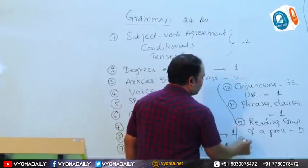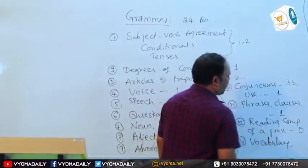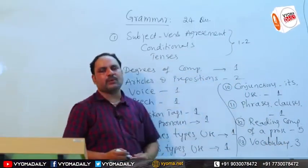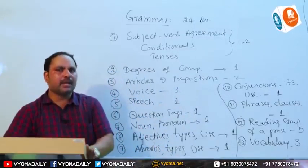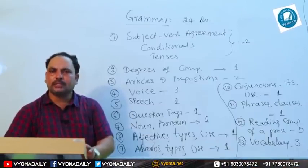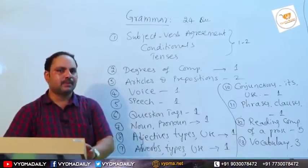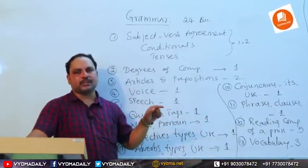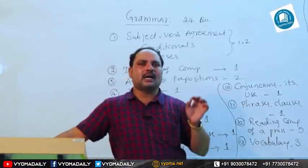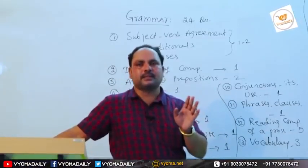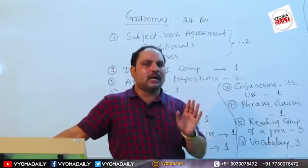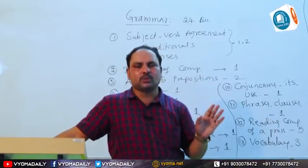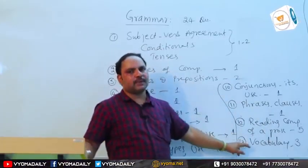The thirteenth area is vocabulary, where three questions are expected. The key areas in vocabulary include synonyms, antonyms, one-word substitutions, phrasal verbs, and idioms. For vocabulary preparation, try to read unfamiliar words from textbooks of class 4 to class 10, as most vocabulary in the exam is drawn from those textbooks.